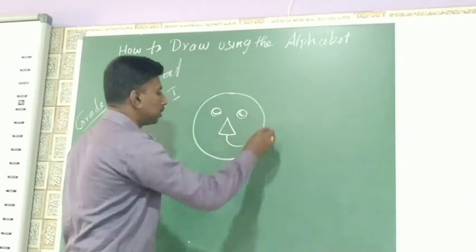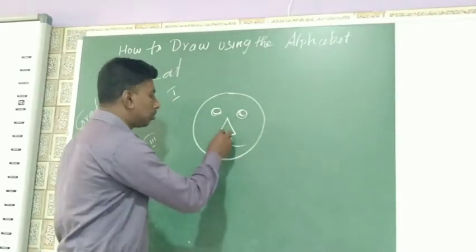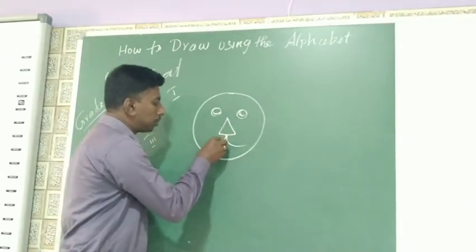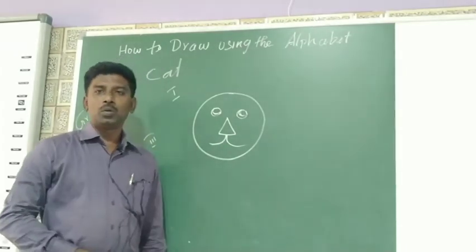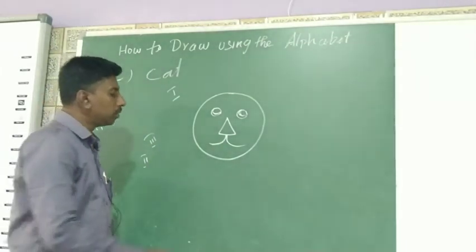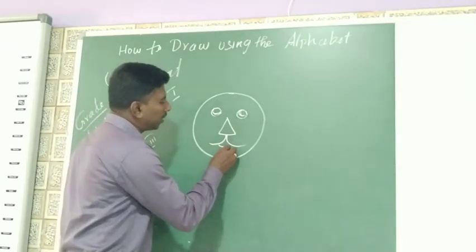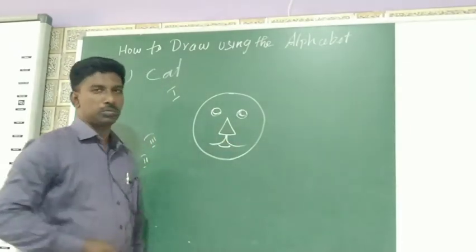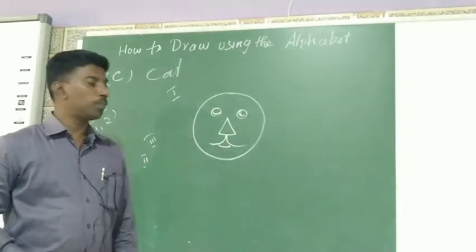Then left hand side one curve, left hand side one curve, like that. Then two ears. This is second step.